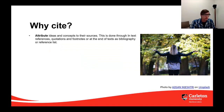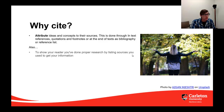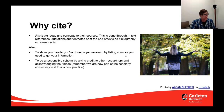We cite to attribute ideas and concepts to their sources, and this is done through in-text references, quotations, and footnotes, or at the end of texts in something similar to a bibliography or a reference list. But there are also a few other reasons that we cite — to show your reader that you've done proper research by listing the sources you used, and to be a responsible scholar by giving credit to other researchers and acknowledging their ideas.